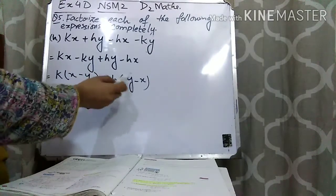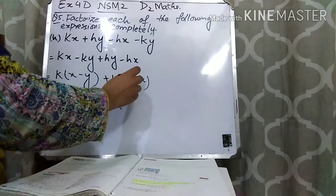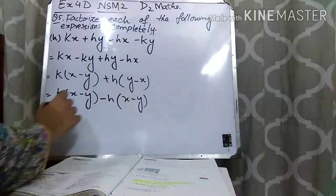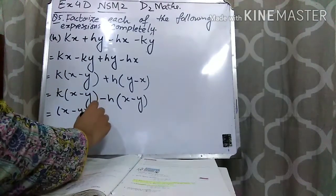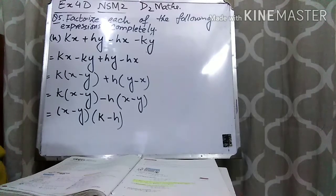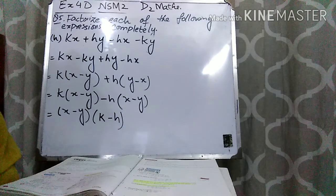In part H, k is present in the first and last term, and h is present in the two middle terms. So take k common from the first and last term, and h common from the middle two terms. Write these terms accordingly. From the first two terms taking k common leaves x minus y, and taking h common from the middle two leaves y minus x. Now you want to take x minus y common, but the signs with variables are different. So take minus common from the h bracket — minus times plus becomes minus, and the signs with y and x flip — giving x minus y.